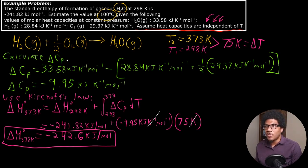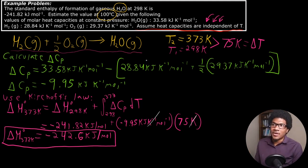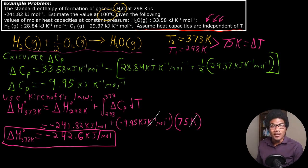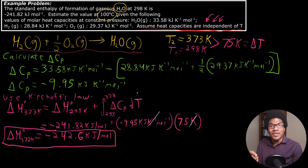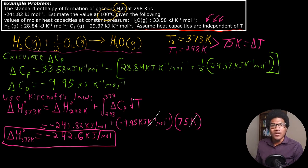When heat capacities are independent of temperature, using Kirchhoff's Law is fairly simple. Making sure you have the correct balanced chemical equation is crucial — it won't always be given to you; you might have a combustion, formation, or decomposition reaction. If heat capacities are not independent of temperature, you'll need to solve an integral for a polynomial, but that's usually straightforward. Kirchhoff's Law is very powerful for calculating enthalpies at elevated temperatures, especially when standard temperature data is readily available in tables.